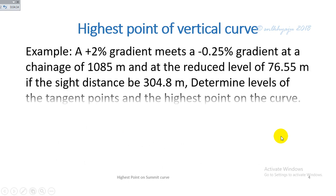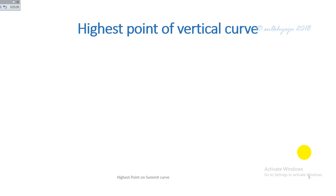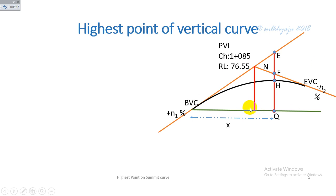Example: A +2% gradient meets a −0.25% gradient at a chainage of 1085 m and a reduced level of 76.55 m. If the sight distance is 304.8 m, determine the levels of the tangent points and the highest point on the curve. Assume eye level of driver = 1.143 m and height of obstruction = 0.1 m. This is shown in the schematic diagram of the summit curve.